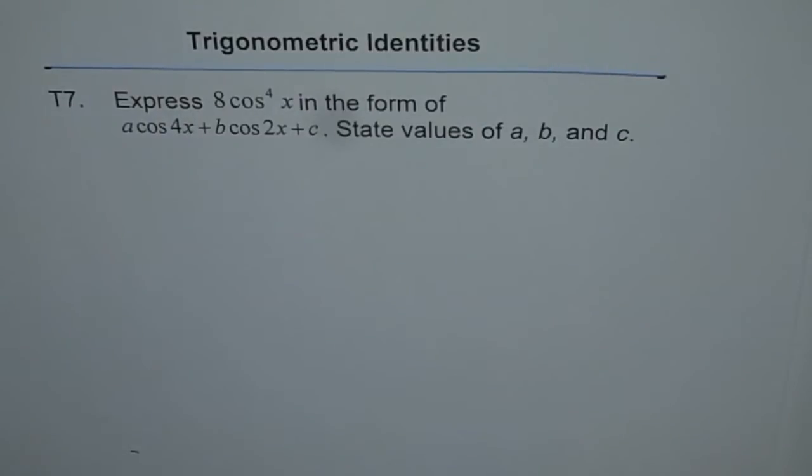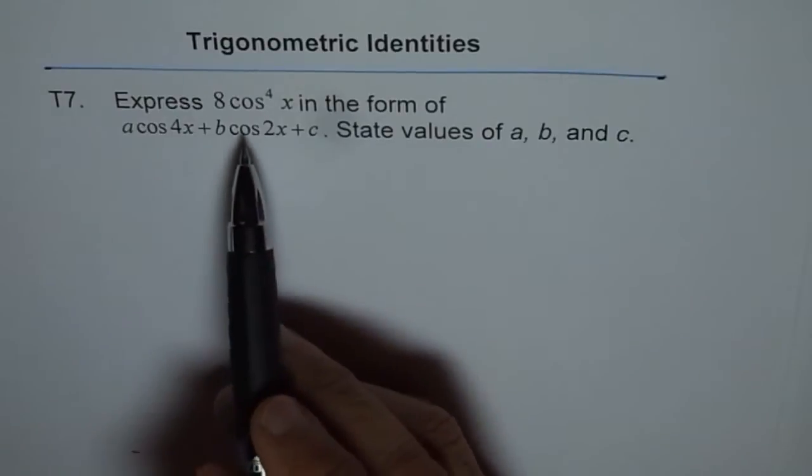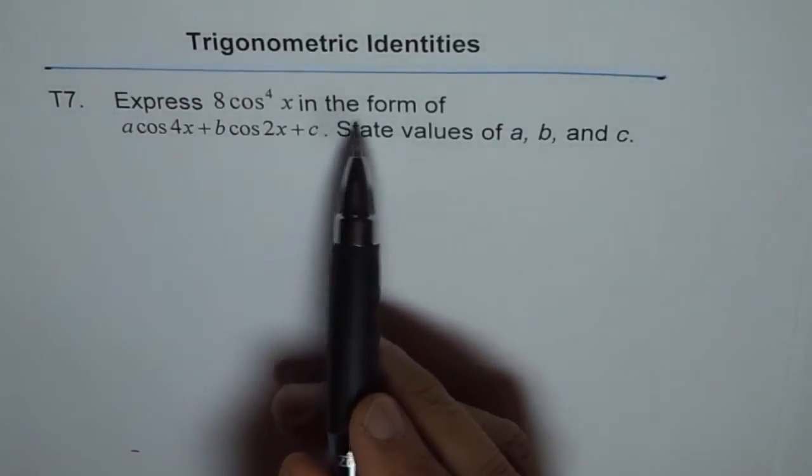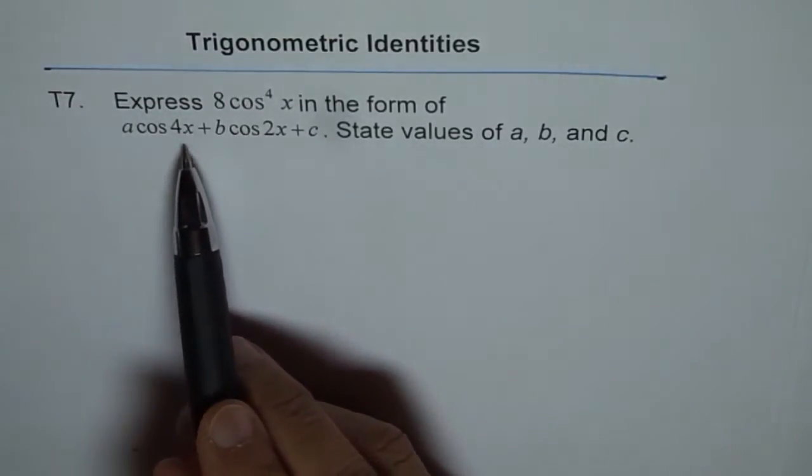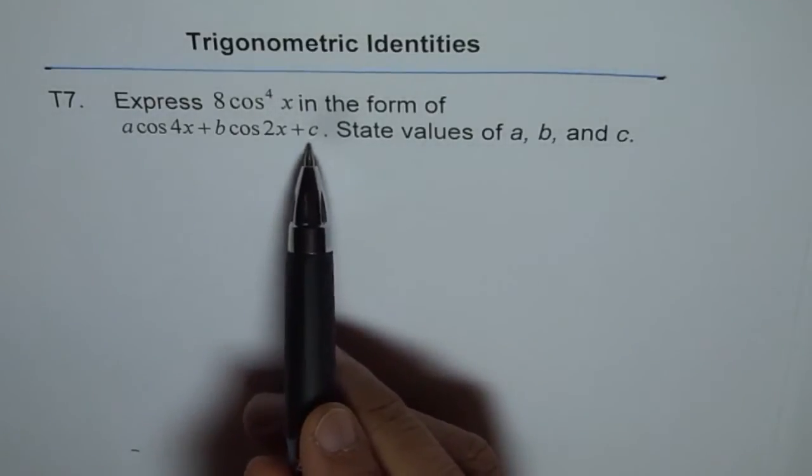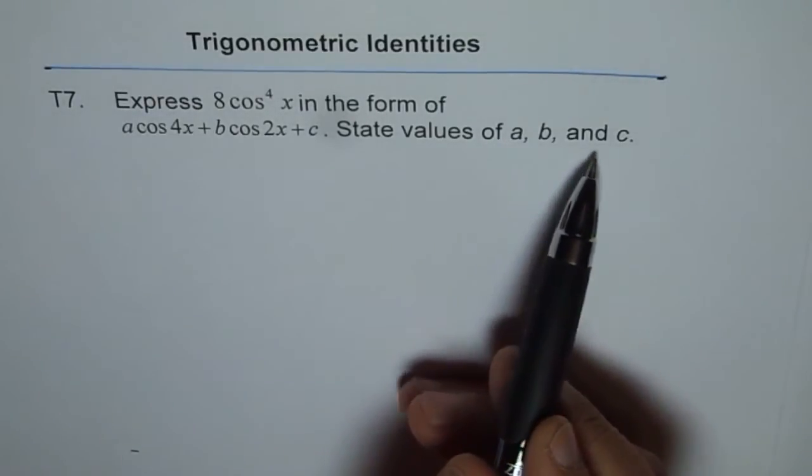Trigonometric identities is a thinking problem T7. Express 8 cos to the power of 4x in the form of A cos 4x plus B cos 2x plus C. State the values of A, B and C.